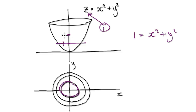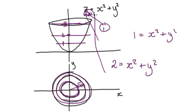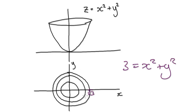At a height of 2, you cut it across here, corresponding to this circle. Putting z = 2 into the equation gives 2 = x² + y², so it has a radius of √2. At a height of 3, putting z = 3 gives 3 = x² + y², so it has a radius of √3. So the radii are √3, √2, 1, and so on.